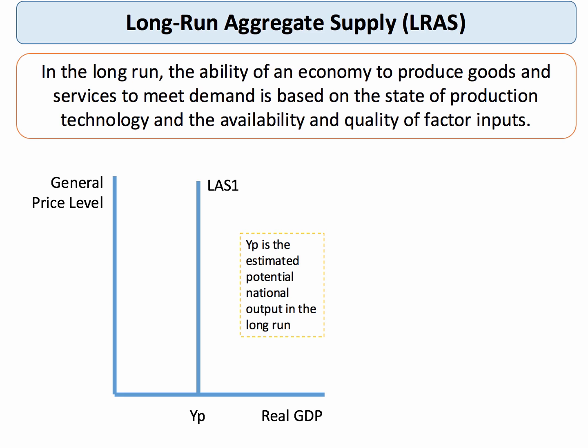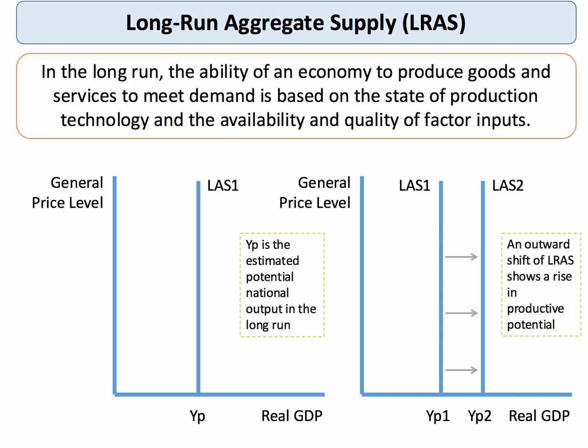The LRAS curve is drawn as a vertical line because it's assumed to be independent of the general level of prices. YP, or potential output, is an estimate of the potential supply-side capacity of a country in the long run. We hope that curve will shift to the right year on year, so a movement from LAS1 to LAS2 is an outward shift of aggregate supply, signifying an increase in the country's productive potential.